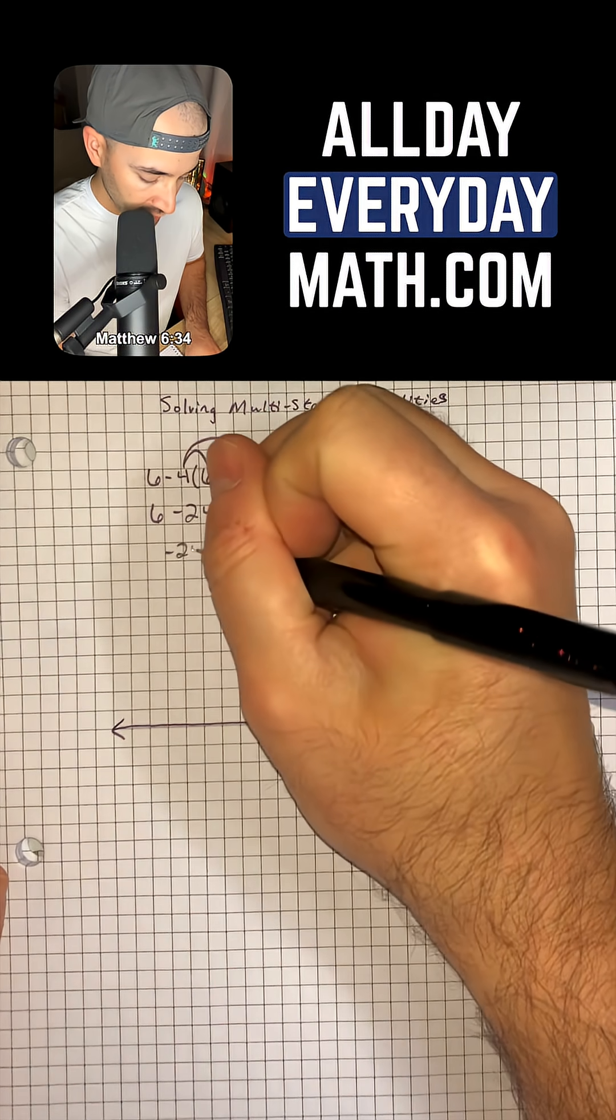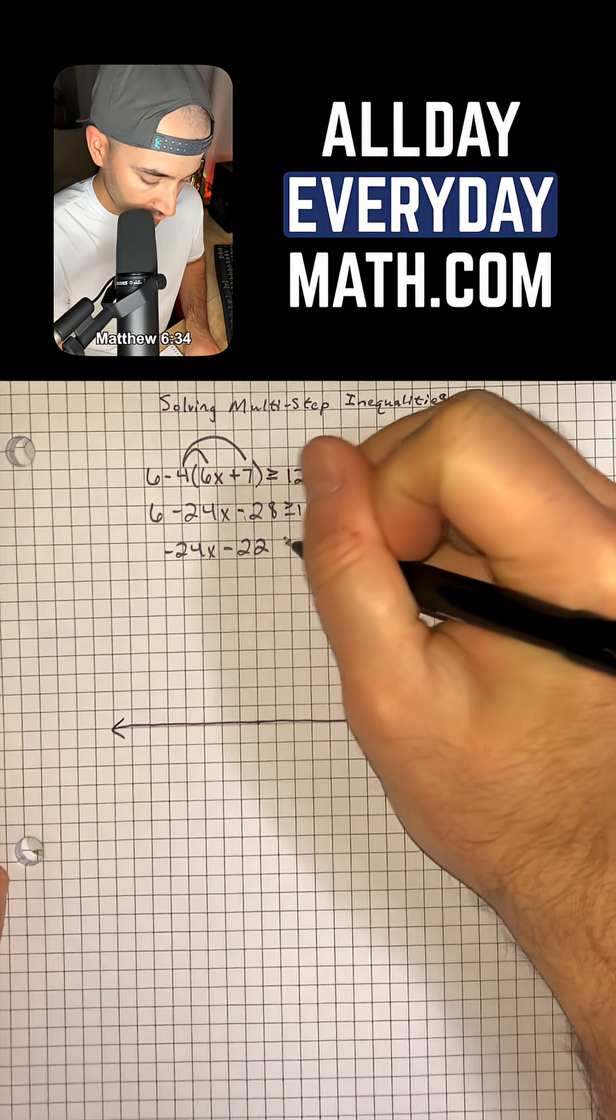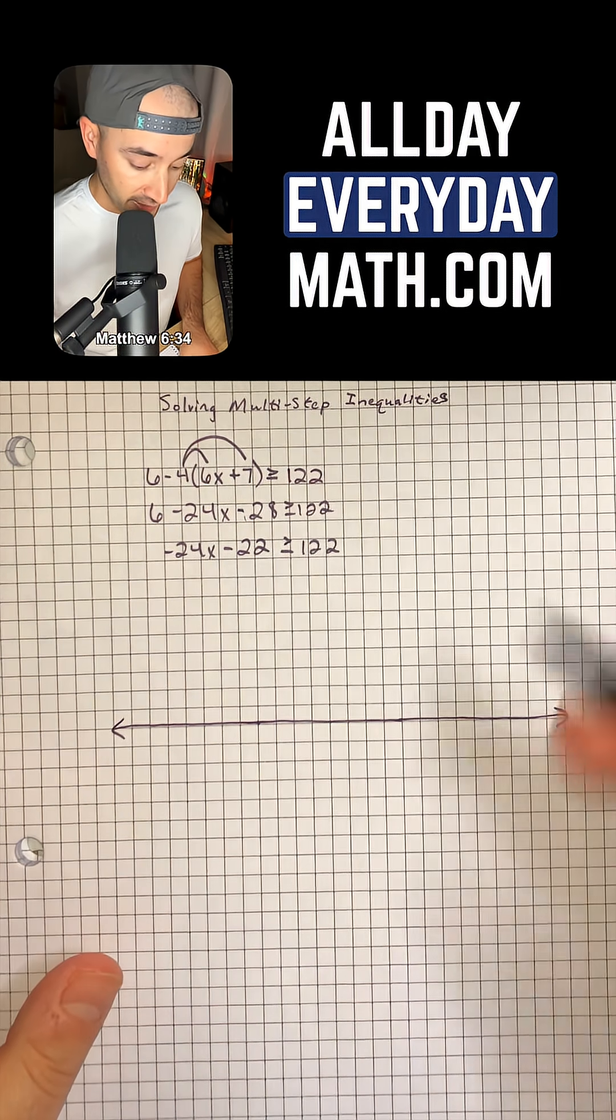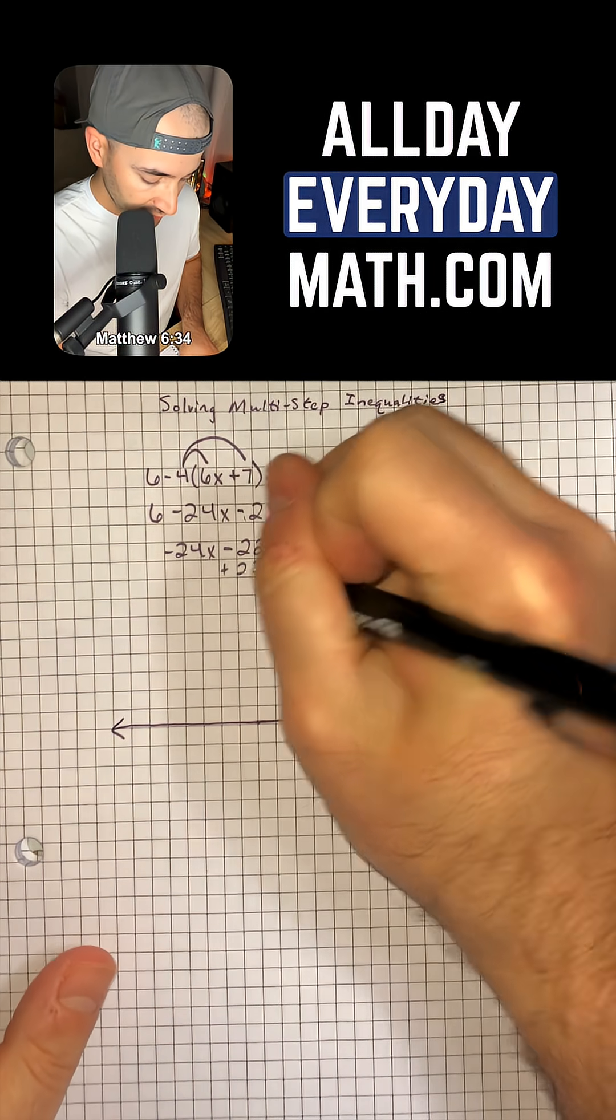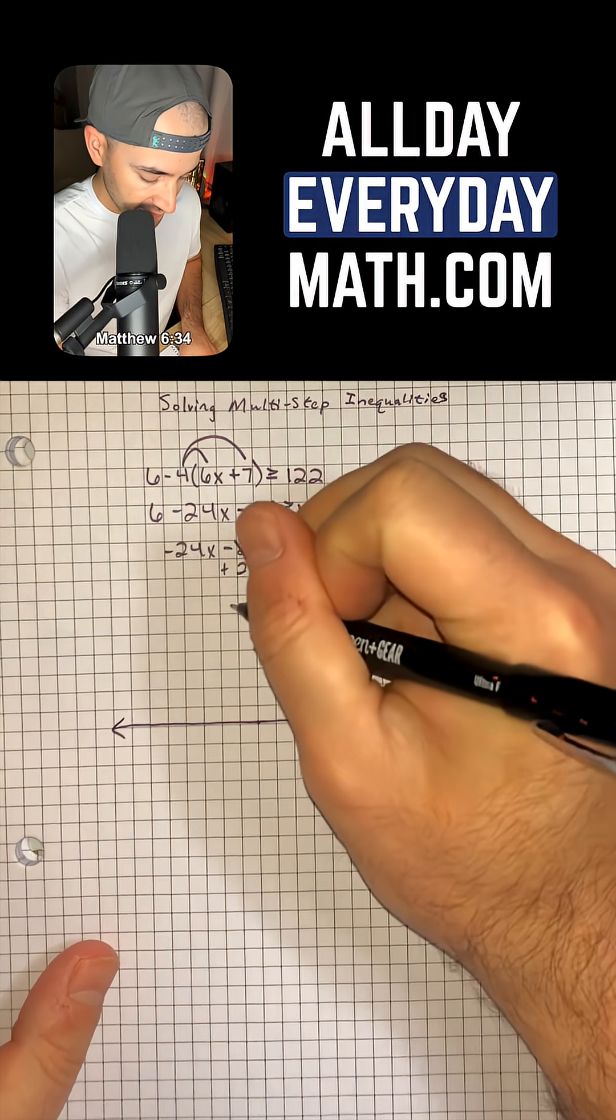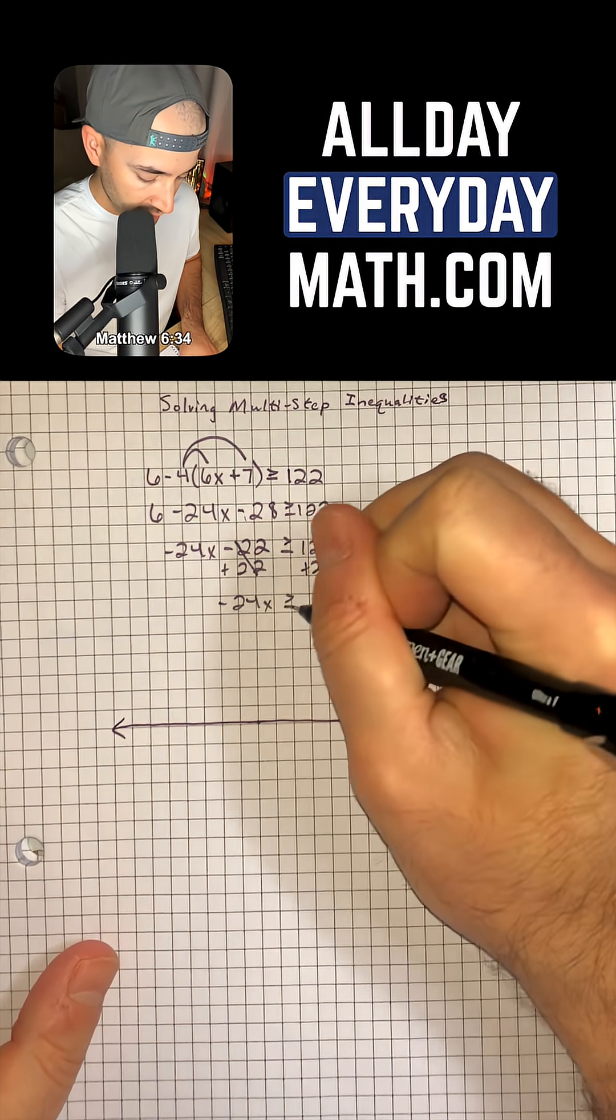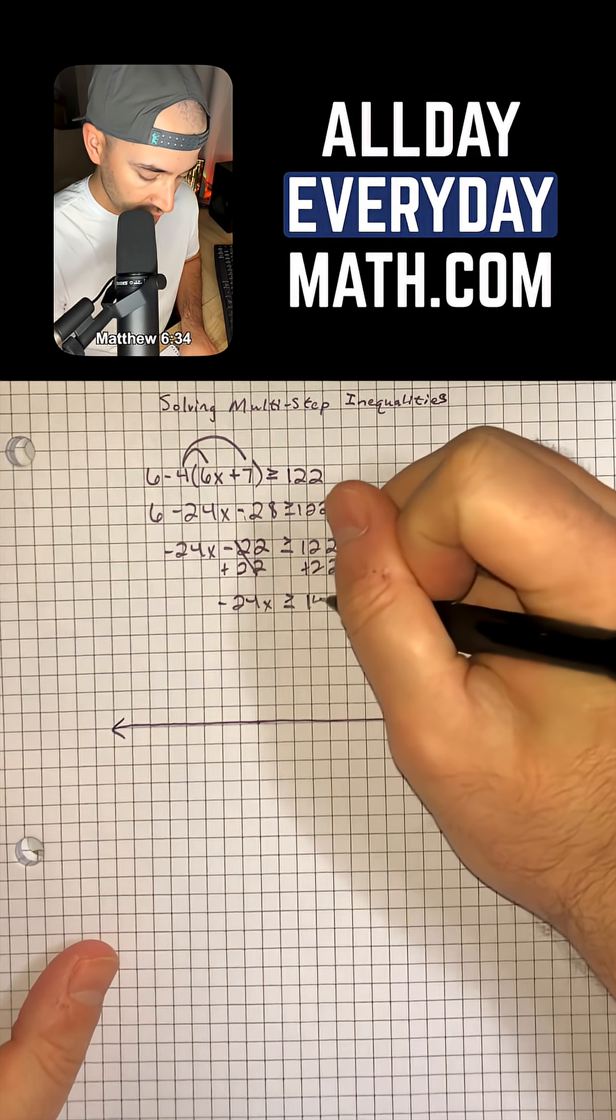So I'm going to write negative 24x minus 22 is greater than or equal to 122. Now it's just a two-step inequality. So we're going to add 22 to both sides so that cancels and leaves us with negative 24x is greater than or equal to 122 plus 22 is 144.